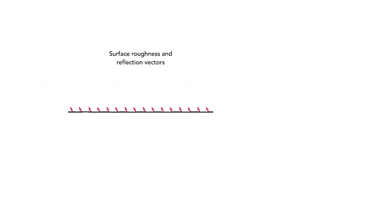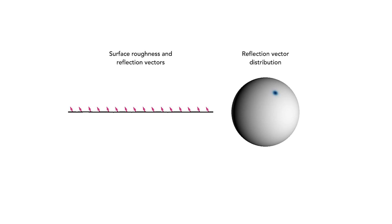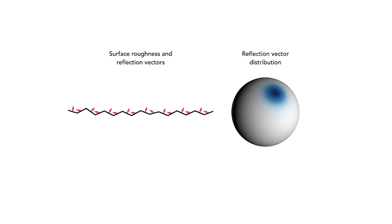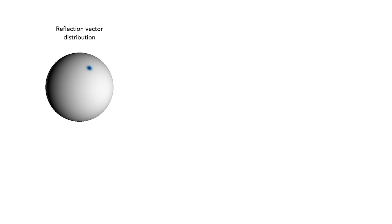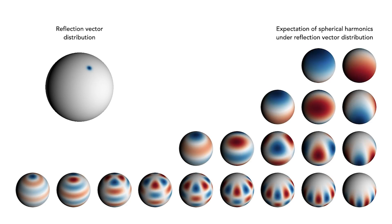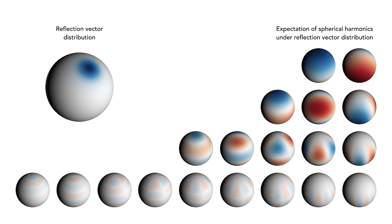First, we predict a scalar roughness at any 3D location, which defines a Gaussian-like distribution over reflection directions at that point. Shiny materials have a concentrated distribution of reflection directions, and rough materials have a wider distribution, corresponding to blurrier specularities. We propose to encode the distribution of reflection directions as the expected value of a set of spherical harmonics under that distribution, which we call an integrated directional encoding. The encodings for smoother regions have more high frequencies, while for rougher materials with wider distributions these high frequencies are attenuated, resulting in the network producing a smoother, view-dependent outgoing radiance.